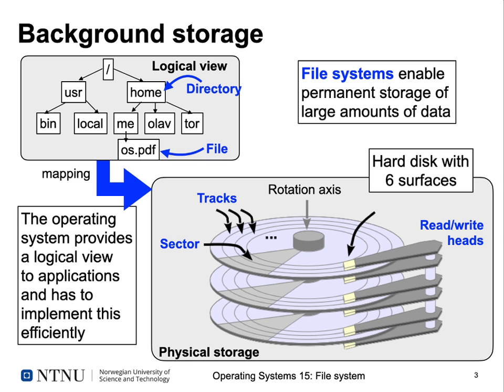More modern disks make this easier for the programmer by mapping a linear logical sector number to a combination of head number, track number, and sector number. But if you wanted to access your data just using an index number on your disk, that would be very tedious. So essentially, what the operating system has to do is provide a higher-level abstraction to make it simple for application programs and ultimately humans to work with data stored on a disk. This is done by providing a so-called file system.